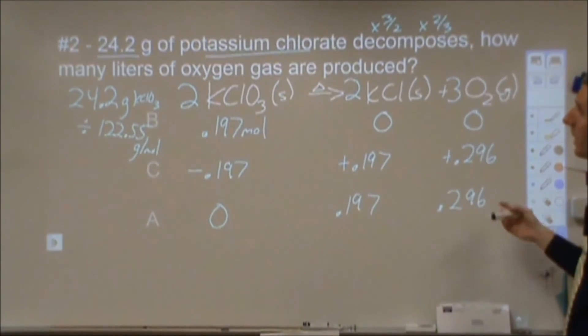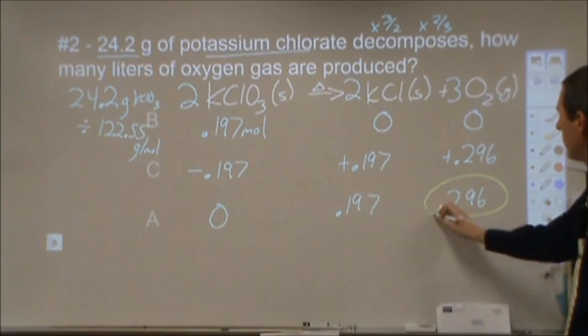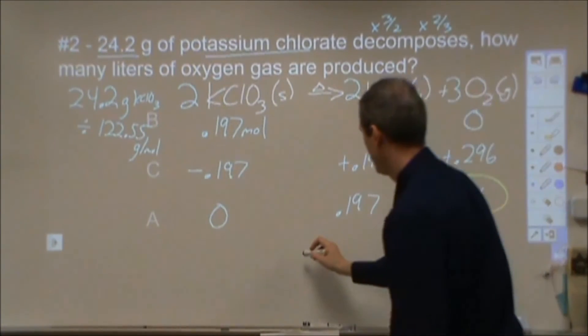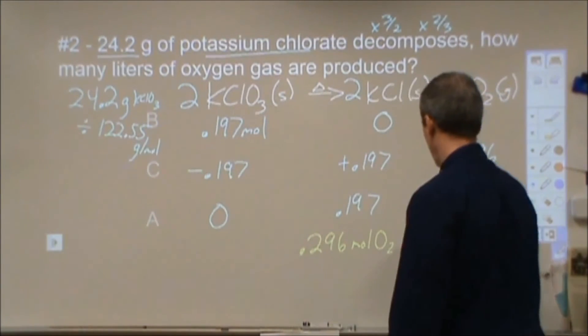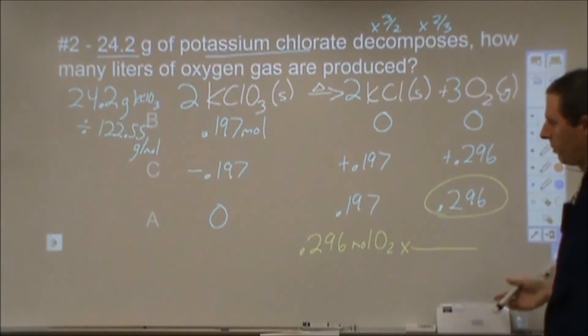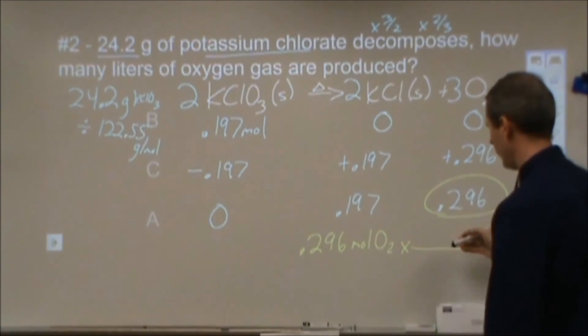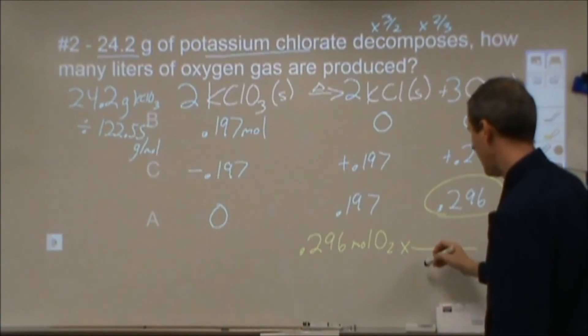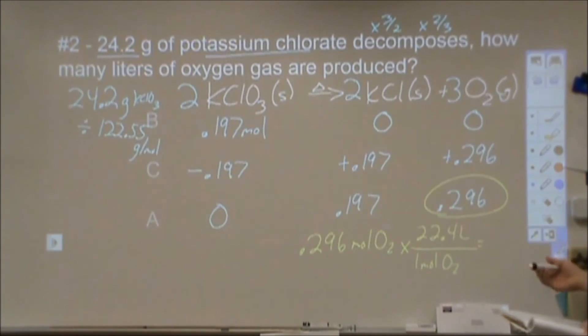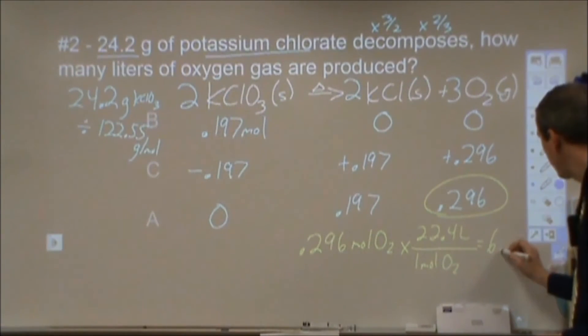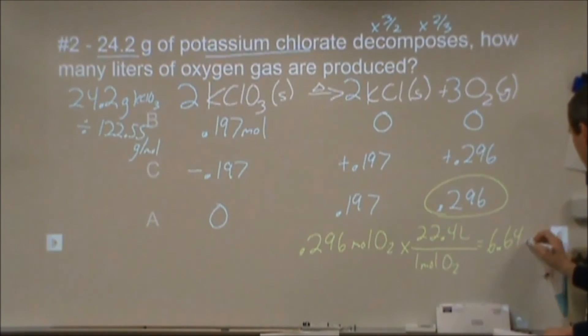After my reaction is complete, I will have 0.197 moles of this, 0.296 moles of that. The final part says how many liters of oxygen are produced. So I'm going to take my moles here, and we're going to assume this is at standard temperature and pressure even though we're heating. We'll assume it kind of cools down at the end. One mole of any gas at standard conditions is 22.4 liters. With 22.4, I get 6.64 liters of oxygen gas as my final answer.